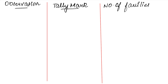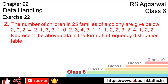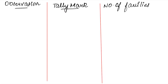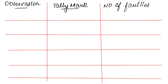For the observation column, we look at the raw data and find the minimum value, which is 0, and the maximum value, which is 4. So we write 0, 1, 2, 3, and 4 in the observation column.